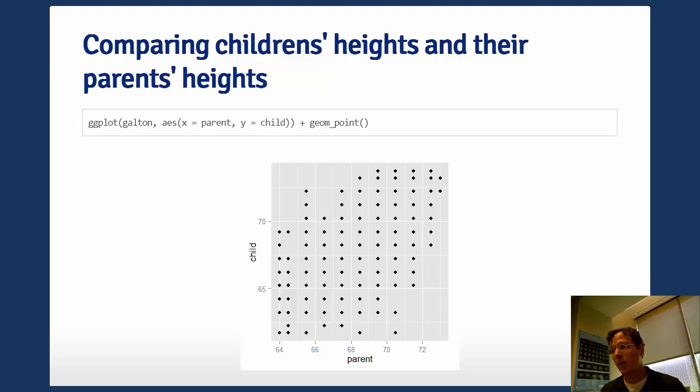Here I use a ggplot. There's numerous failings in this plot. One of the primary failings is that these points are overplotted. There's lots of different paired parent-child x, y values at each one of these specific points.